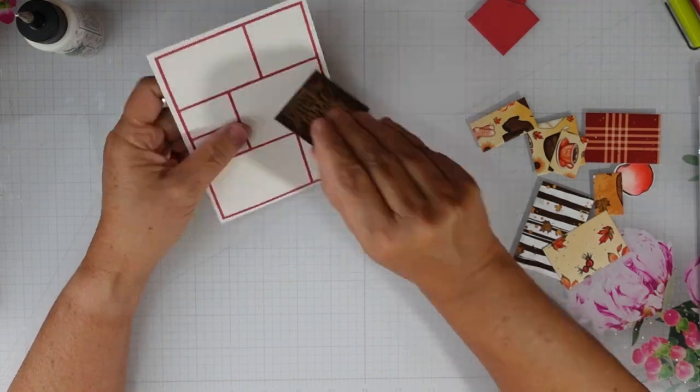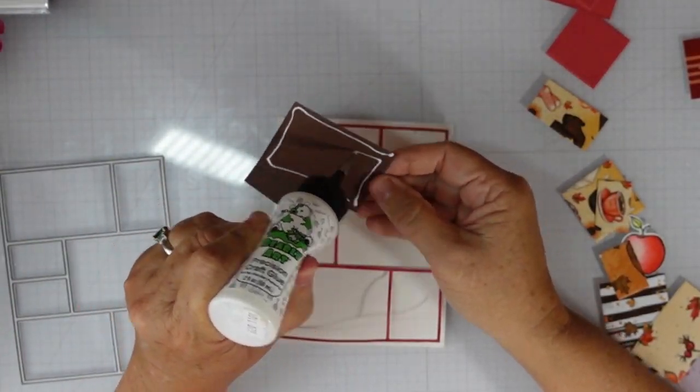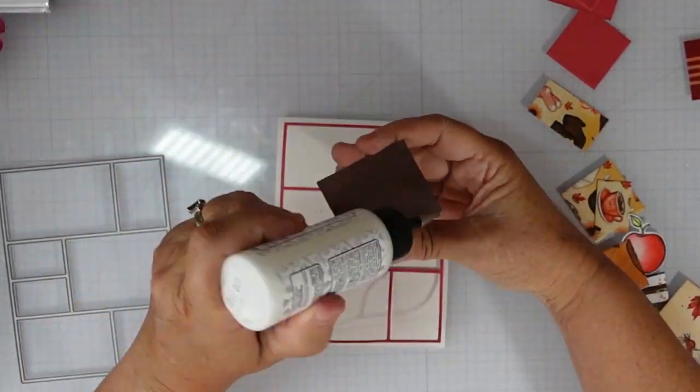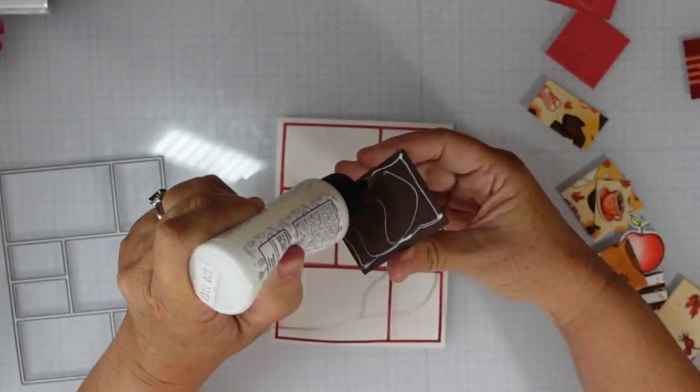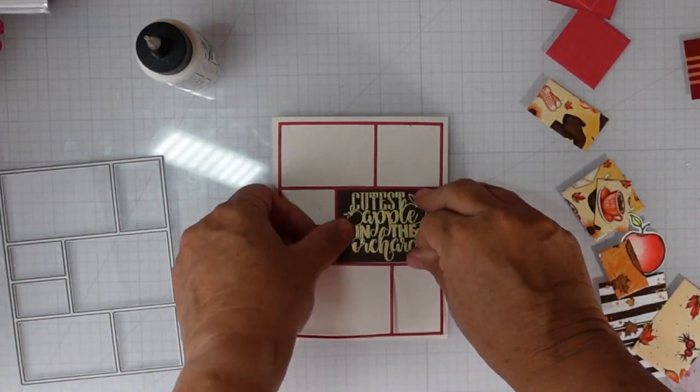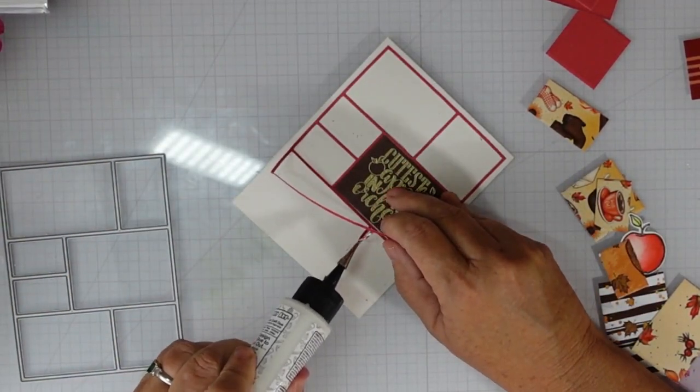But when I place it on, I see that that square right there is not lining up. I am able to lift it up in time. You can see that it's kind of wavy at the bottom. That's because I lifted it up and I'm going to straighten out that box. So using wet glue is going to be your friend with this type of die.